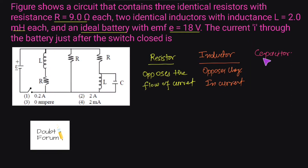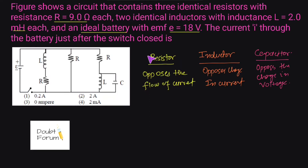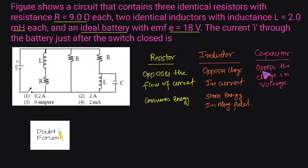The capacitor is the circuit element which opposes the change in voltage. The resistor opposes the flow of current, the inductor opposes the change in current, and the capacitor opposes the change in voltage. Out of these three, resistors are the only elements that dissipate energy, while inductors store energy in a magnetic field and capacitors store energy in an electrostatic field.